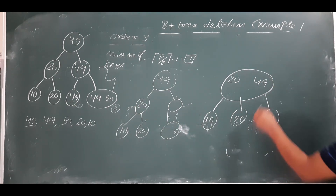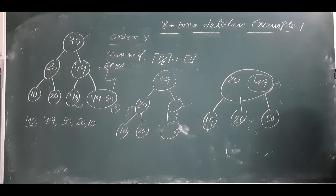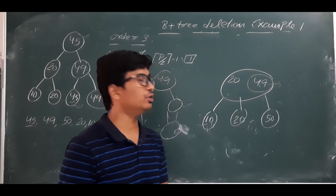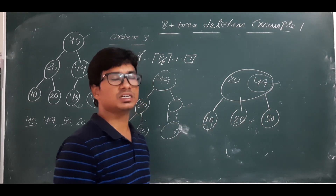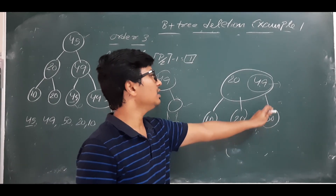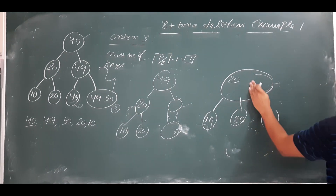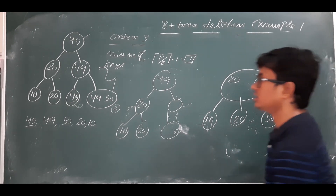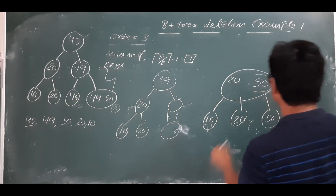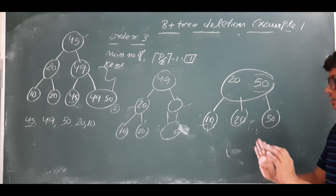There is still a 49 at the root node that needs to be deleted. Since it is in a non-leaf node, we replace it with its inorder successor — the smallest element from the right subtree, which is 50. After replacing, 49 at the root becomes 50. The B+ tree after deleting 49 is now updated.